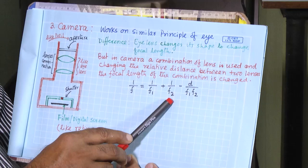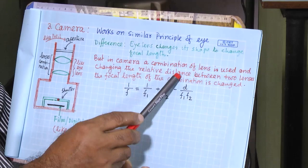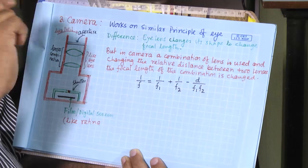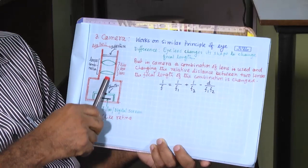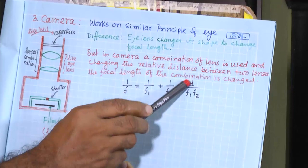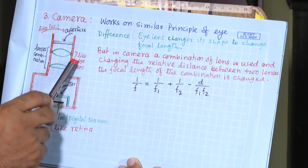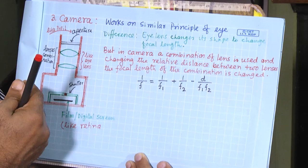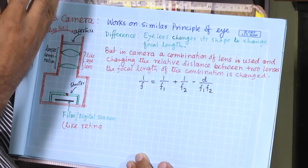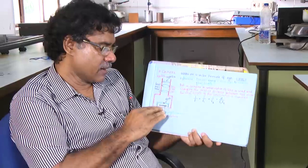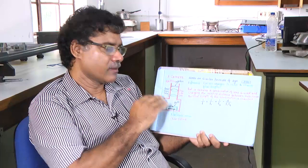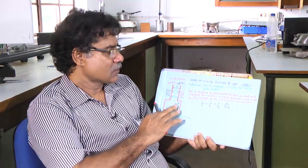The focal length of the combination is 1/F₁ + 1/F₂. With two fixed lenses, by rotating the focus ring you are moving one lens relative to the other — changing the distance d between them. As a result you are changing the effective focal length. In this way you get a variable focal length to focus objects at different distances onto the screen placed at a fixed distance.